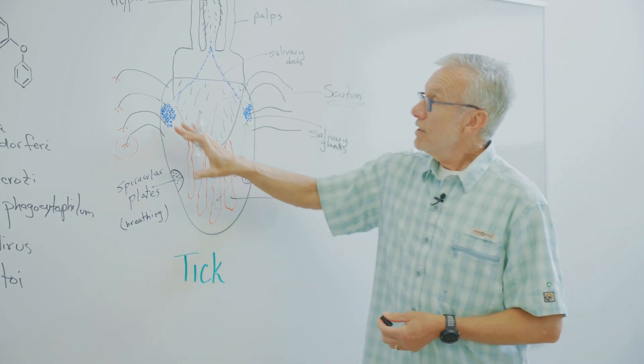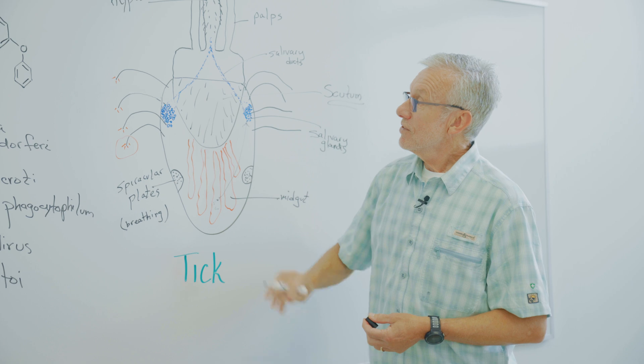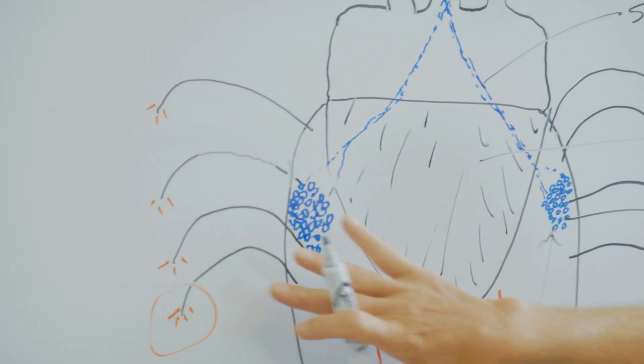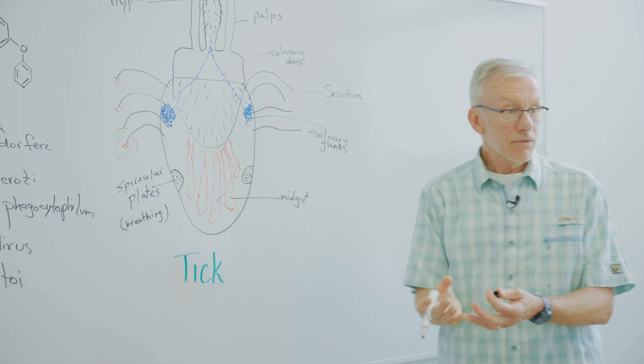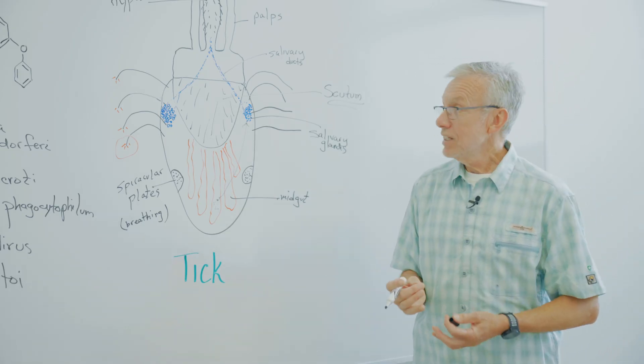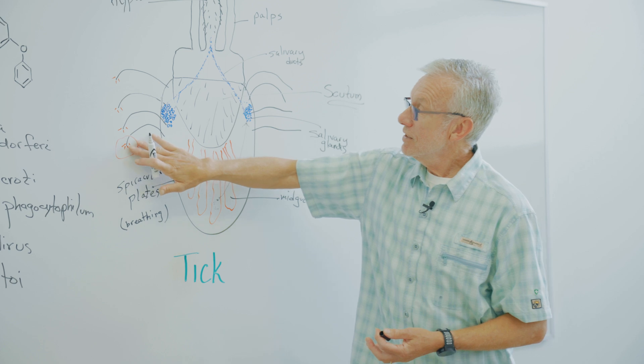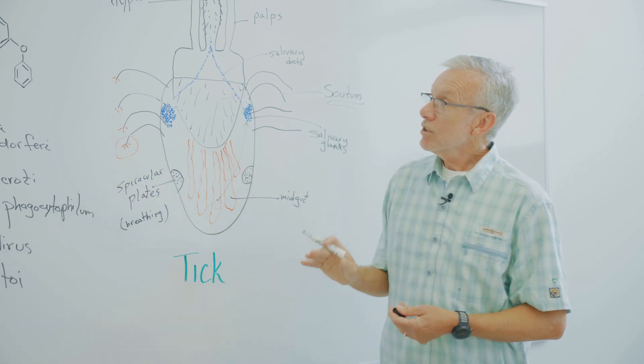Now, one thing when we think about permethrin is this. The tick has eight legs, and they are touching the surface that they're on. And if the surface they're on has permethrin in it, that's how they contact the permethrin. And it works incredibly fast.